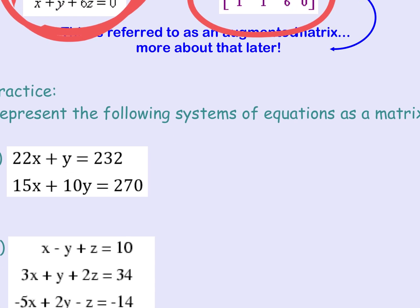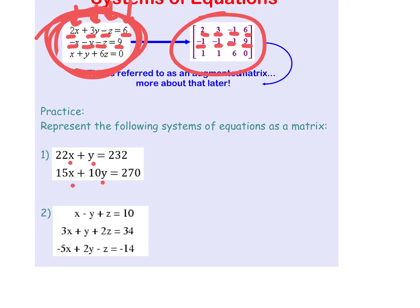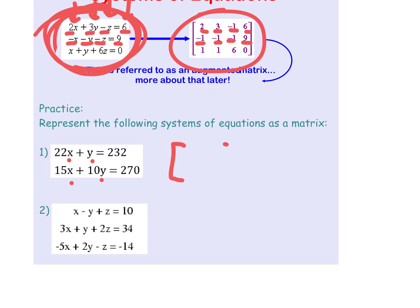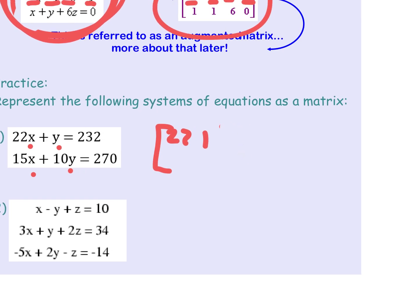Now if we were going to make this into a matrix, I'd first check: did they line it all up so the x's and the y's are first? Yep, they did. All right, so then you're going to make like this a matrix that has a 22 and a 1 and a 232. I didn't leave myself enough room here.